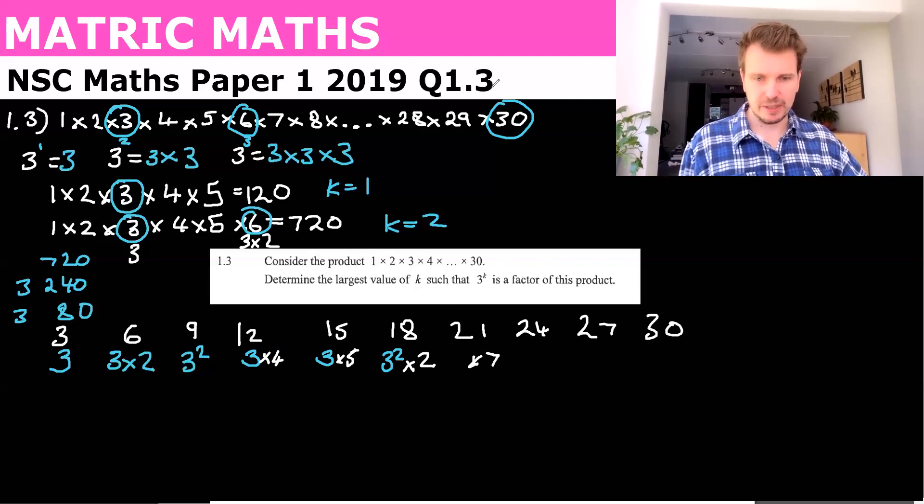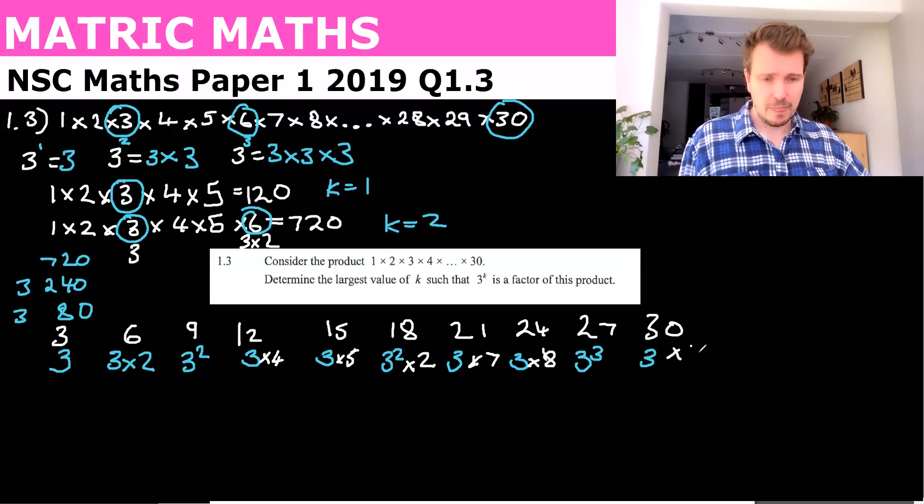And taking a little bit of time over this, the next one was obviously 3 times 8. And 3 times, well, 27 is 3 times 3 times 3. So that's 3 cubed. And then this last one is 3 times 10.